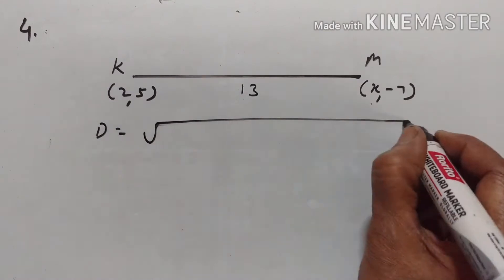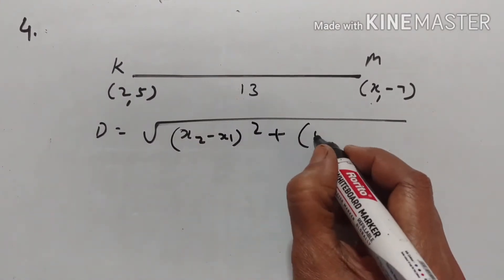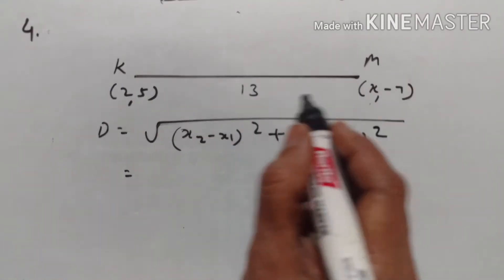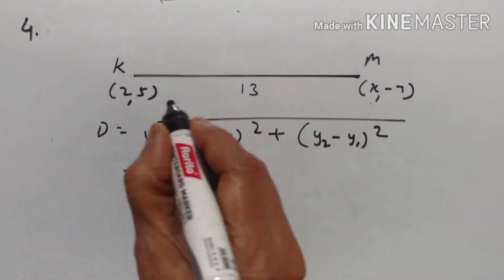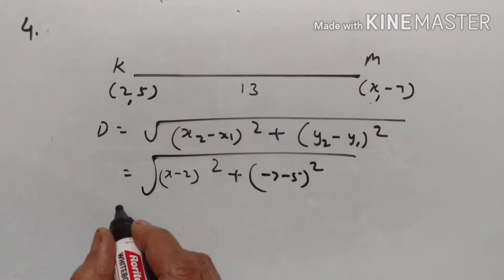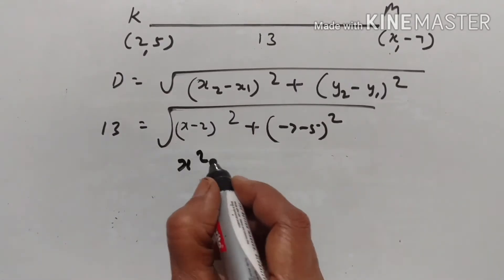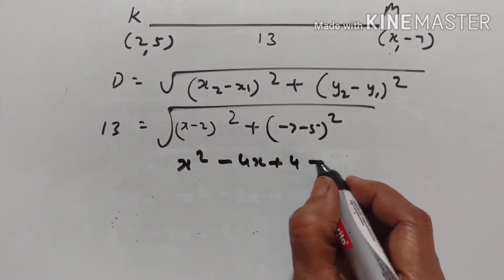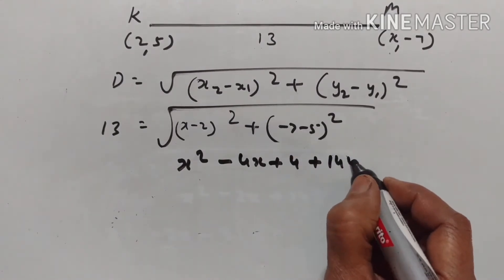Using the distance formula: d = √((x₂ - x₁)² + (y₂ - y₁)²). Substituting: x₂ - x₁ = x - 2, and y₂ - y₁ = -7 - 5 = -12. Expanding using (a - b)² formula: (x - 2)² = x² - 4x + 4, and (-12)² = 144.